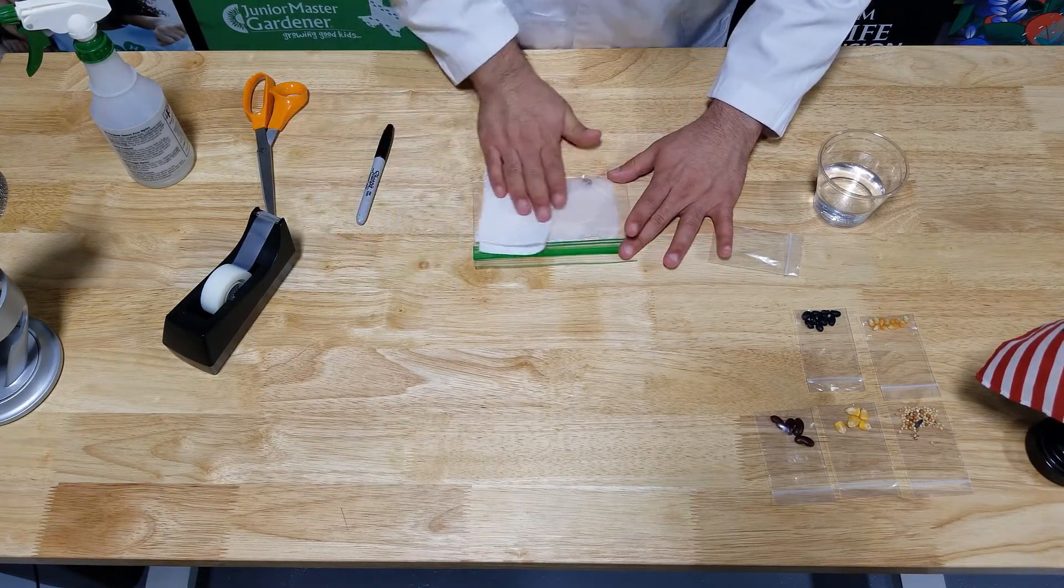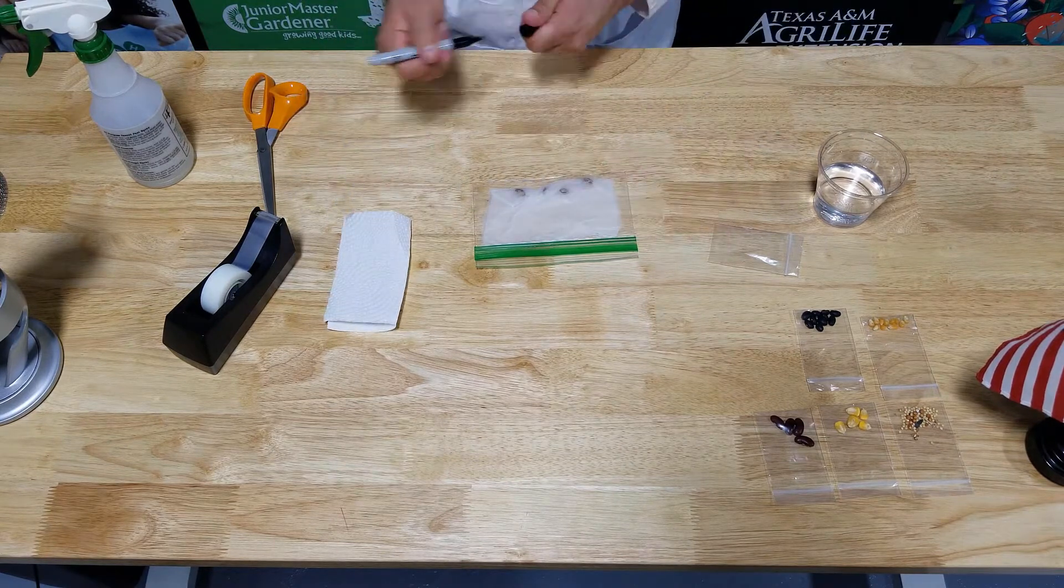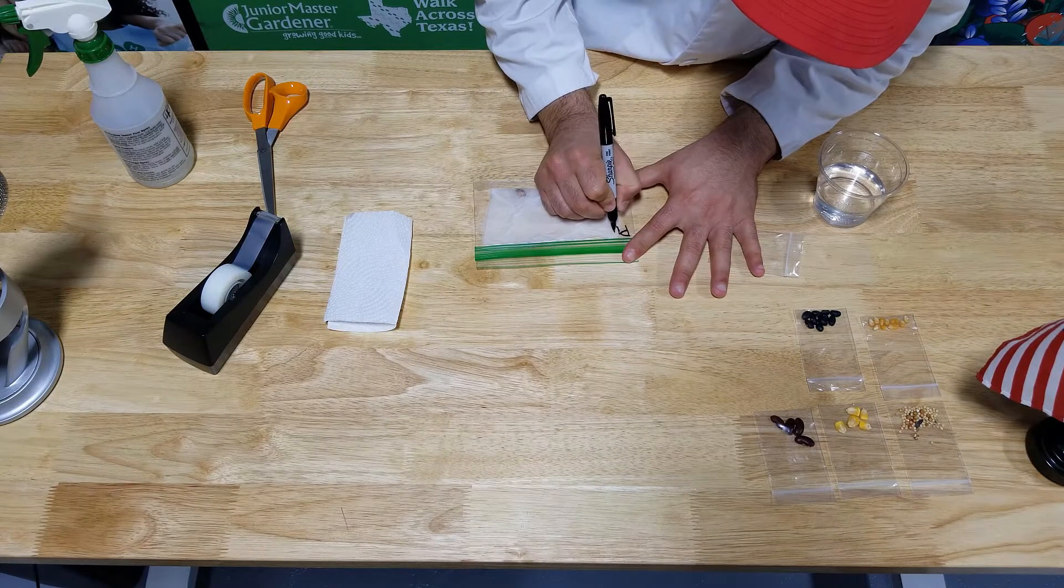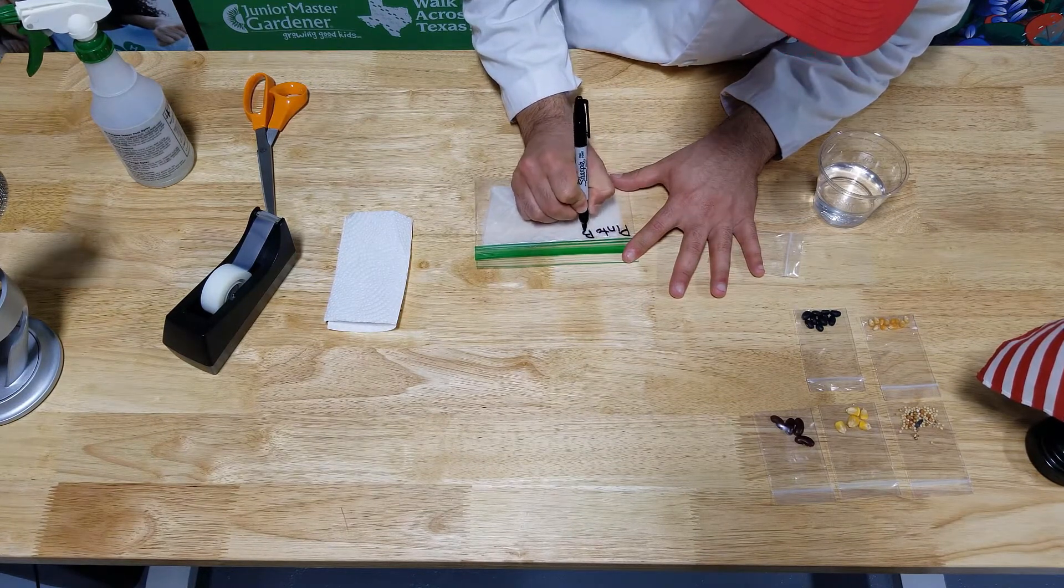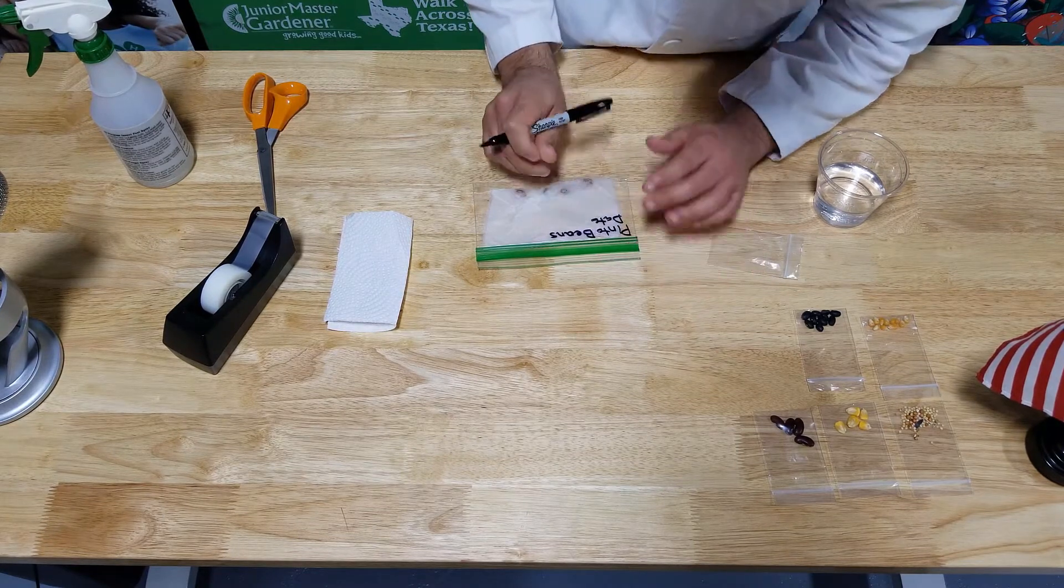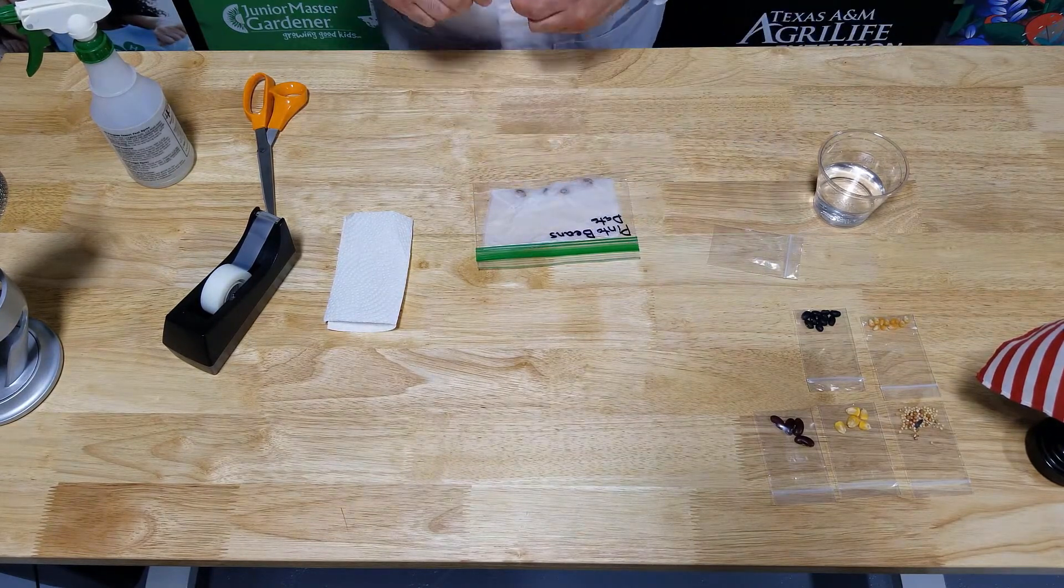Make sure our bag is dry. We want to make sure we label what these are. If you're having multiple seeds, you can put the name of the seed and the date. And use that for each baggie.